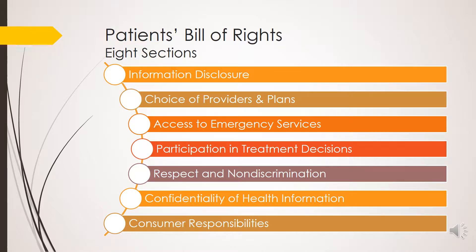There are eight sections within this bill. Section one is Information Disclosure, which talks about the patient having the right to receive accurate and easily understood information about their health plan, healthcare professionals, and healthcare facilities. This part of the bill also addresses patients who speak another language or have a physical or mental disability, requiring that assistance be provided so the patient can understand and make an informed decision.